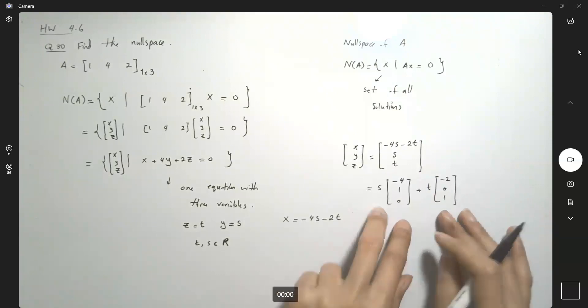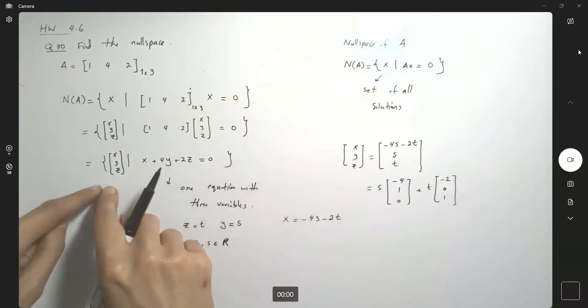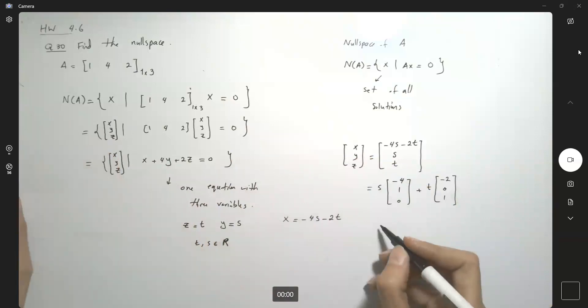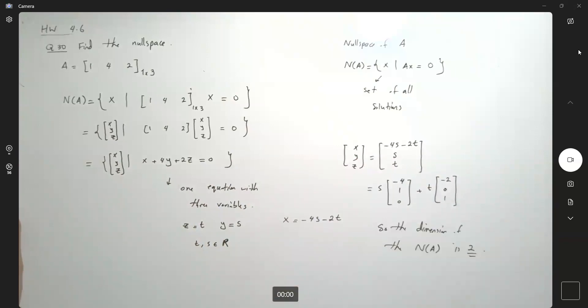So basically you have two vectors generating this set. So the dimension of the null space is 2 because it's generated with two vectors.